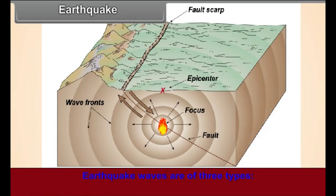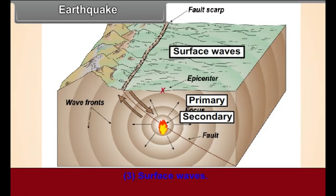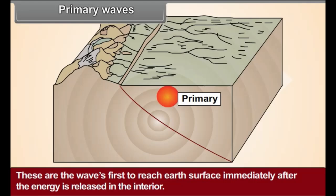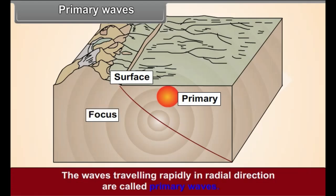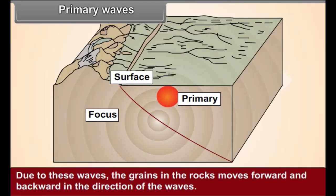Earthquake waves are of three types: Primary, secondary and surface waves. Primary waves. These are the waves first to reach earth's surface immediately after the energy is released in the interior. The waves traveling rapidly in radial direction are called primary waves. Due to these waves, the grains in the rocks move forward and backward in the direction of the waves.